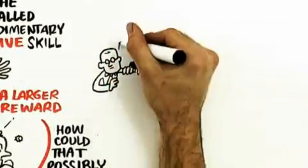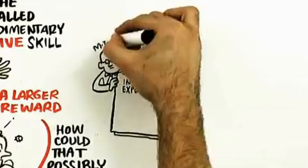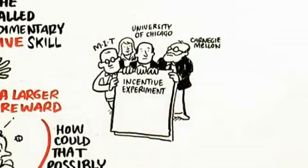What's interesting about this is that these folks who did this are all economists at MIT, the University of Chicago, and Carnegie Mellon - the top tier of the economics profession. And they're reaching this conclusion that seems contrary to what a lot of us learned in economics, which is that the higher the reward the better their performance.